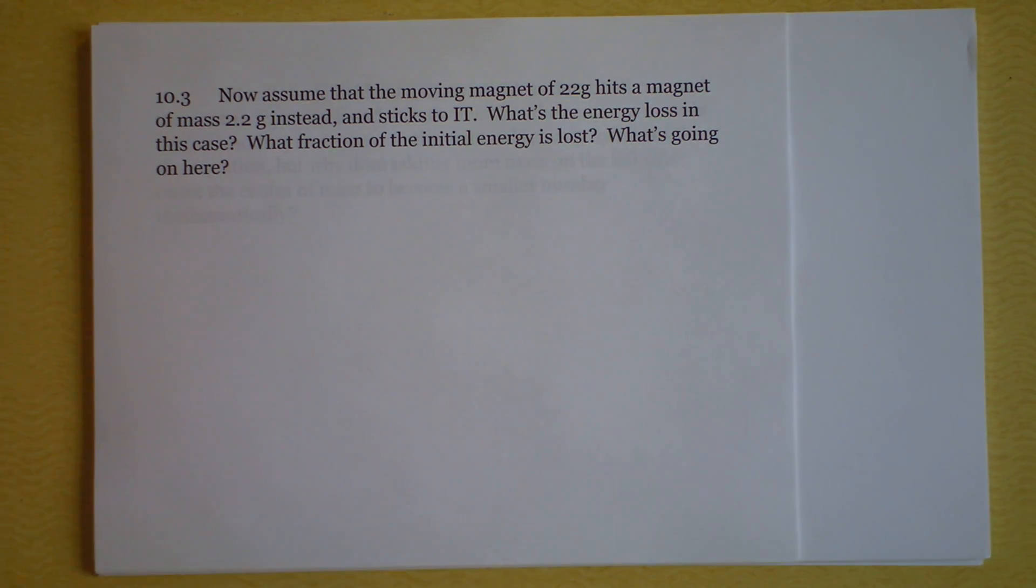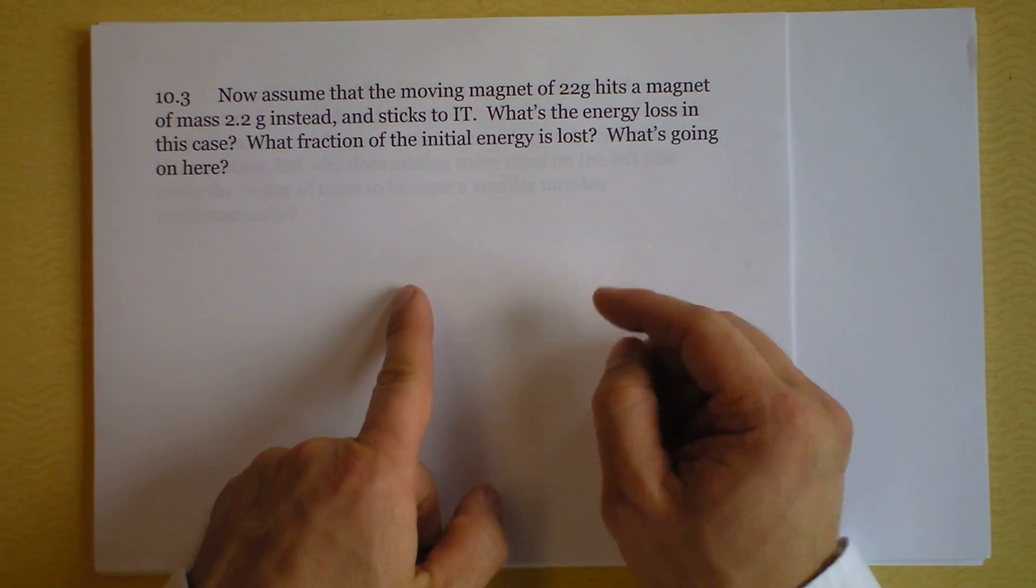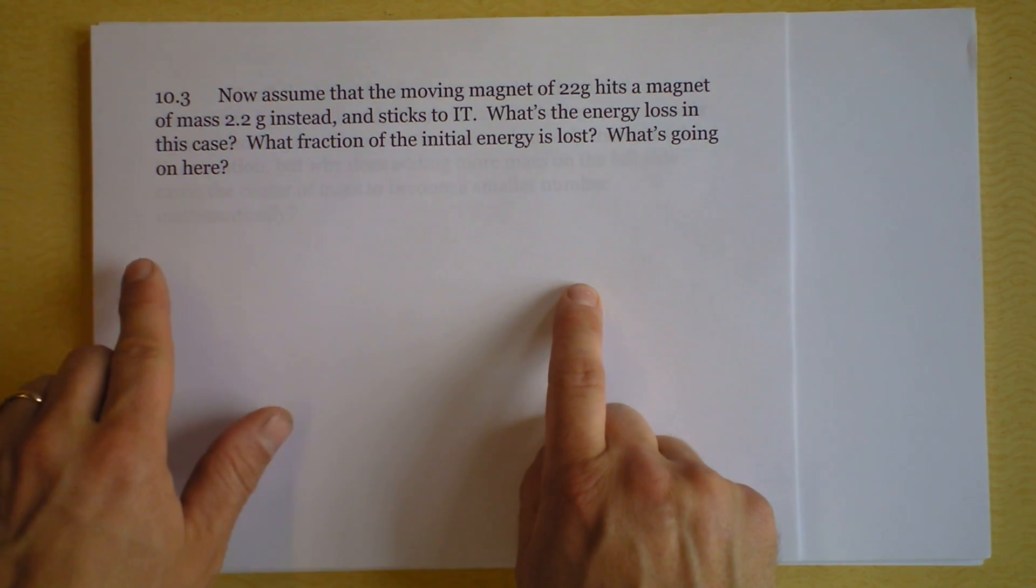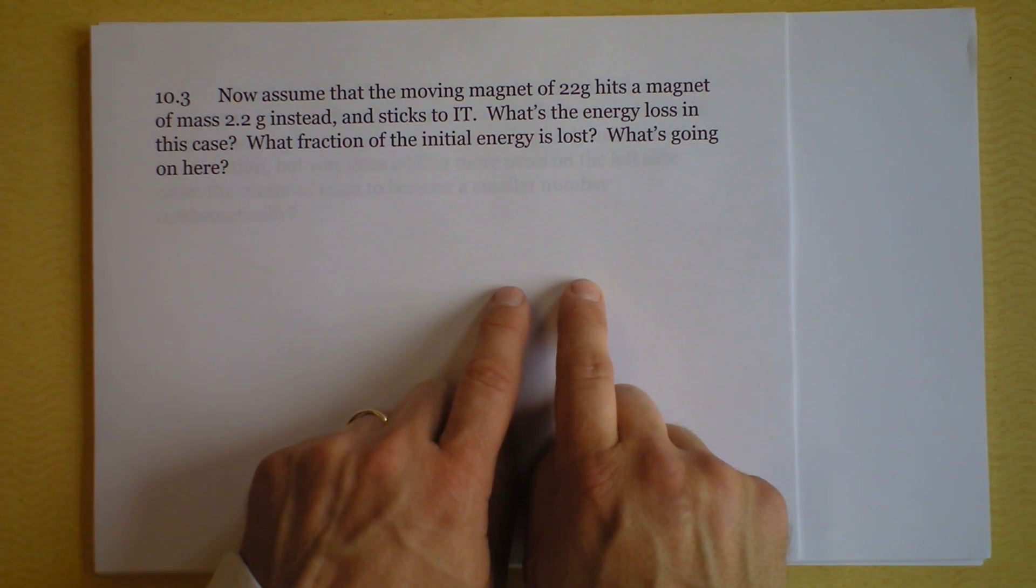And this next problem is another variation on the same theme. You've got a 22 gram magnet moving and a 2.2 gram magnet at rest. So now 10 elevenths of the mass is moving and 1 eleventh of the mass is stationary.